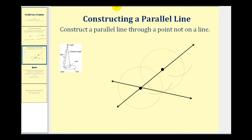Now we're going to take the point of the protractor and put it right here on the intersection of the two lines, and make sure that it opens so that the pencil of the protractor does not extend past our given point. We're going to swing an arc that intersects these two lines — that would look something like this.